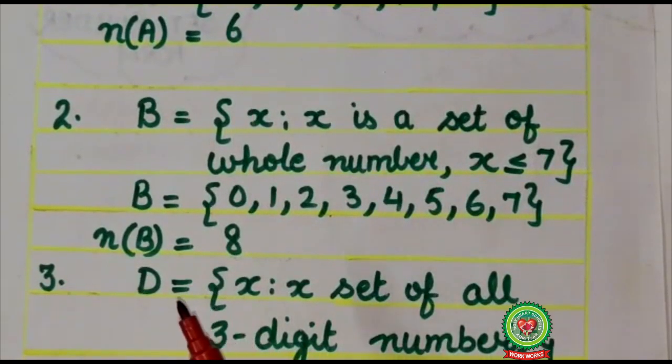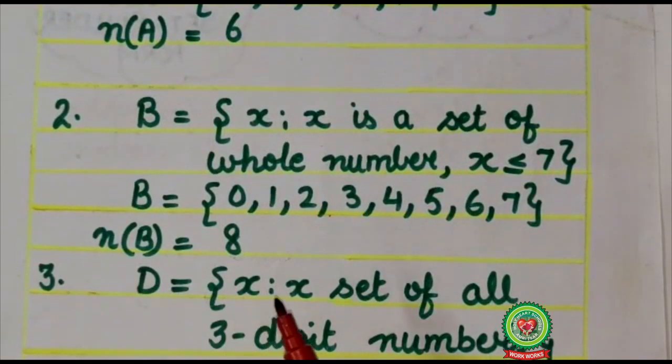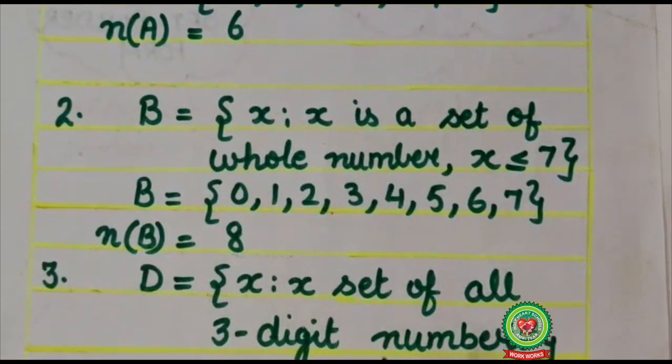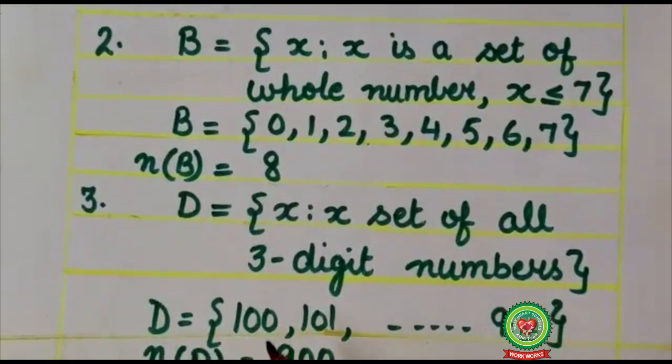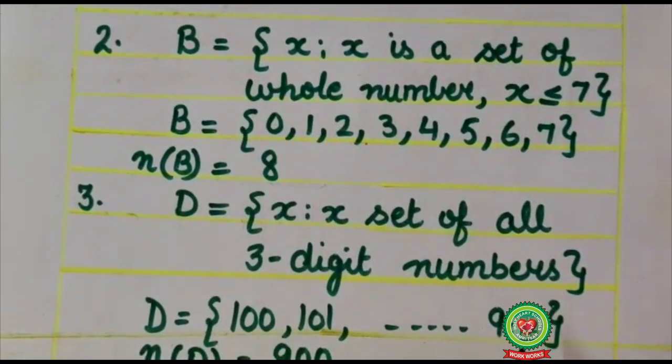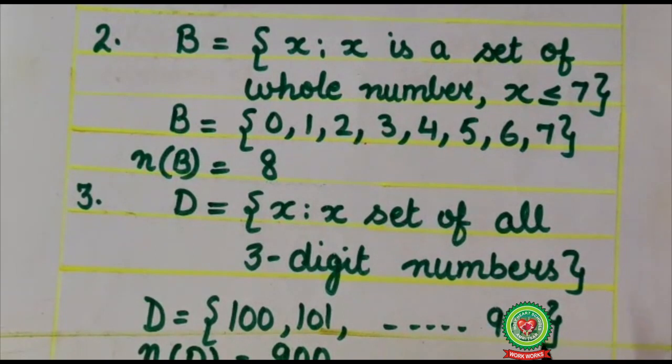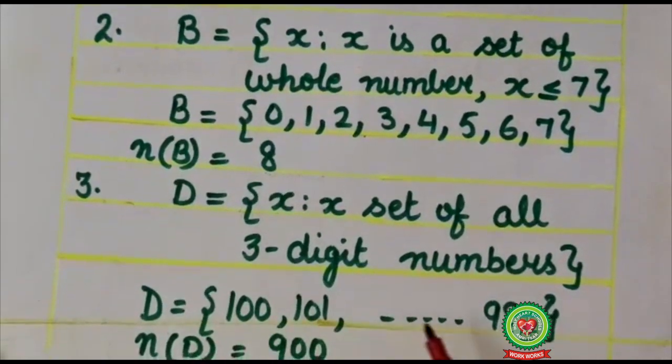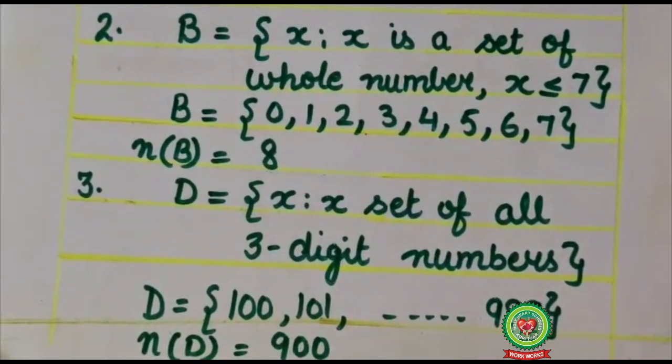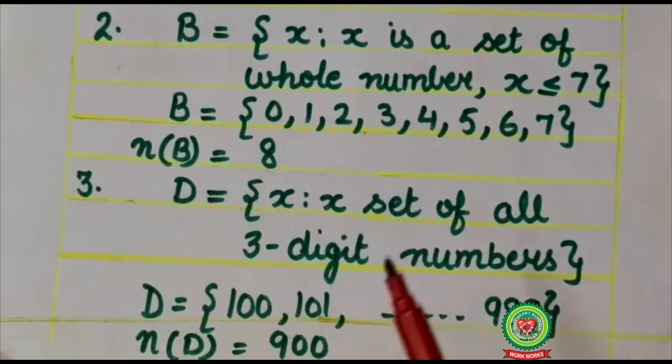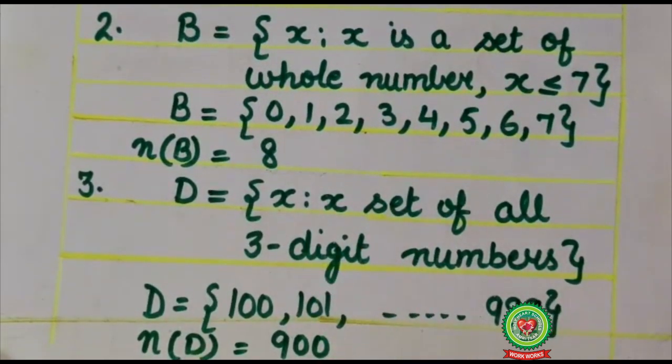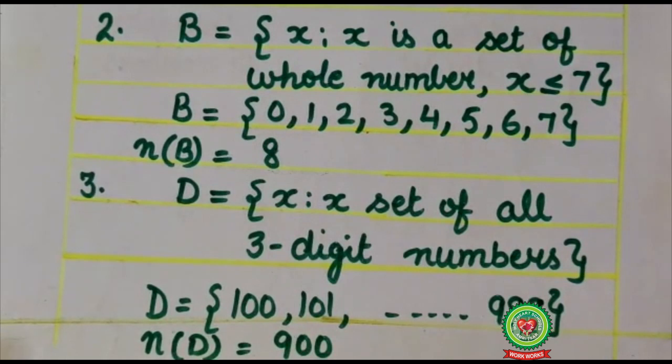Let's have one more example. D: x such that x is a set of all three digit numbers. Three digit numbers start from 100 and end in 999. Now as you can see there are 900 elements. Therefore, it is also a finite set because it is having countable elements.